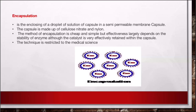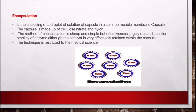Encapsulation is another entrapment method. It involves enclosing a droplet of enzyme solution inside a semi-permeable membrane capsule. Examples of membrane materials include cellulose, nitrite, and nylon. This method is cheap, simple, and very effective, though it is restricted in medical science applications.